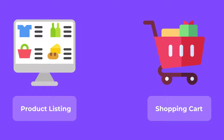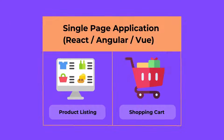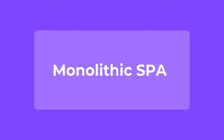Let's say you are building an e-commerce project with some basic functionalities like adding products to a list, adding those products to the shopping cart, and finally checking out. Let's say you are building this e-commerce application using monolithic architecture — meaning a single codebase with one repository having all the features of your application.